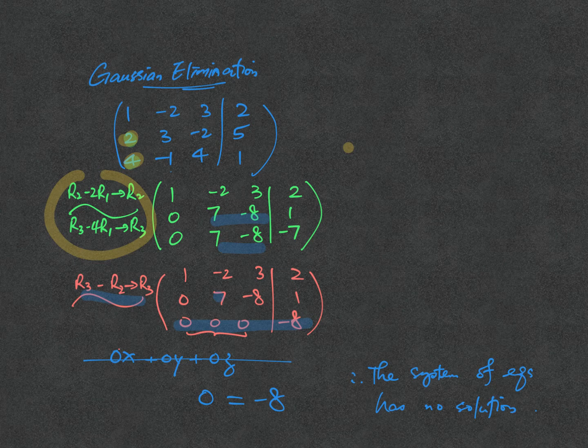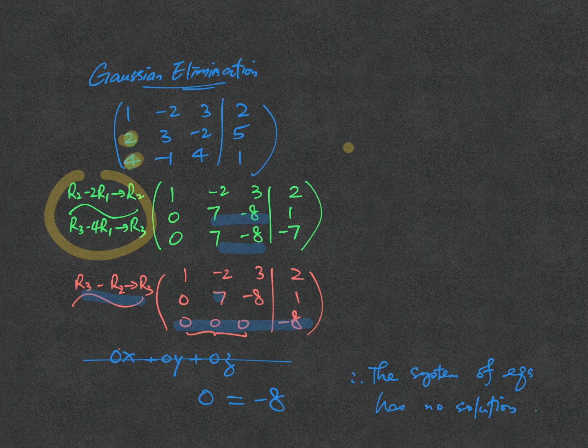In conclusion, you will see that there are two situations, or very special situations, you'll find in Gaussian elimination. As a summary here...